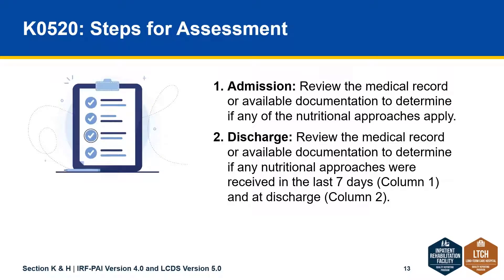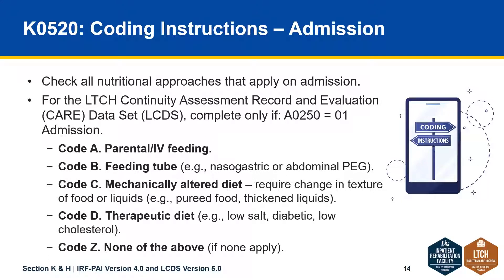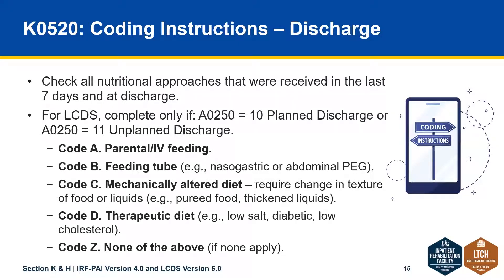Here are the steps for assessment. On admission, review the medical record or available documentation to determine if any of these apply. At discharge, look to see if any were applicable for the last seven days to complete column one, or at discharge for column two. For LTCH, the coding guidance notes you will complete only if AO250 is 01 for admission, or 10 for planned discharge or 11 for unplanned discharge.